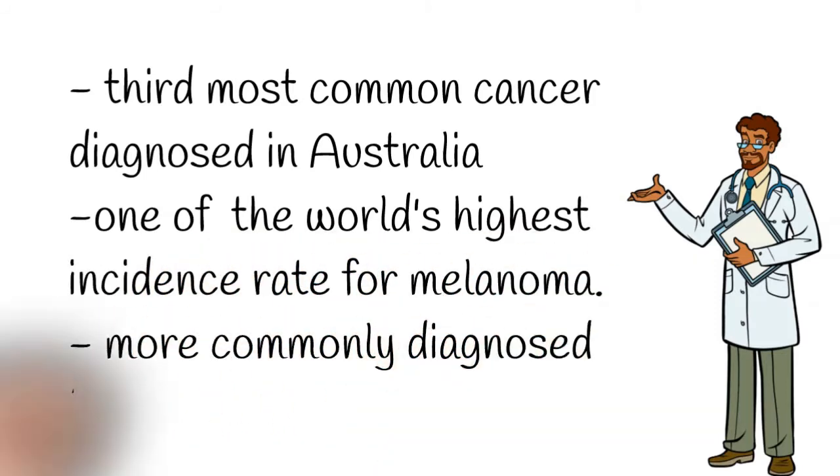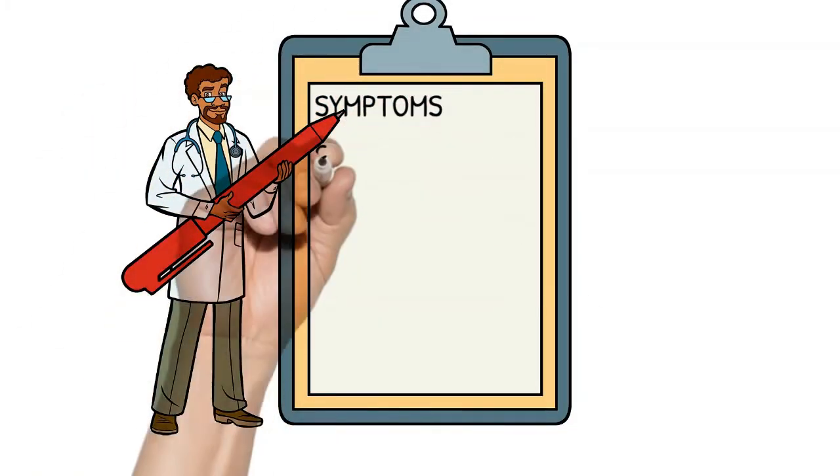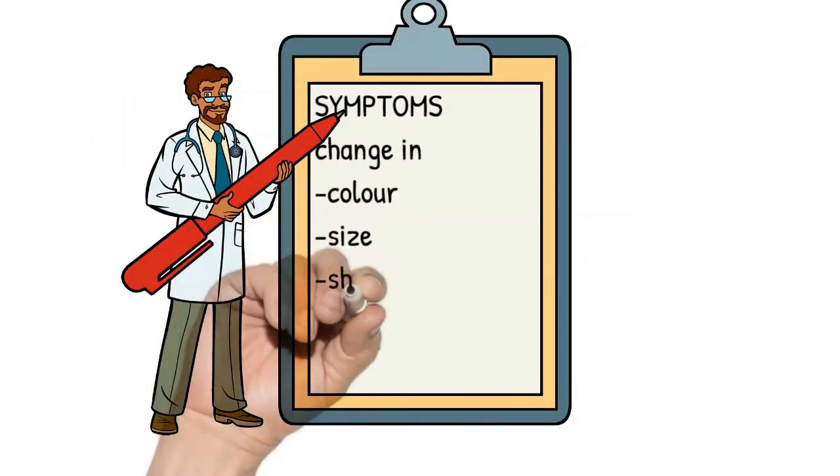Color - a mole may change in color or have different color shades or become blotchy. Size - a mole may appear to get bigger. Shape - a mole may have an irregular border or may increase in height. Elevation - the mole may develop a raised area, itching or bleeding.